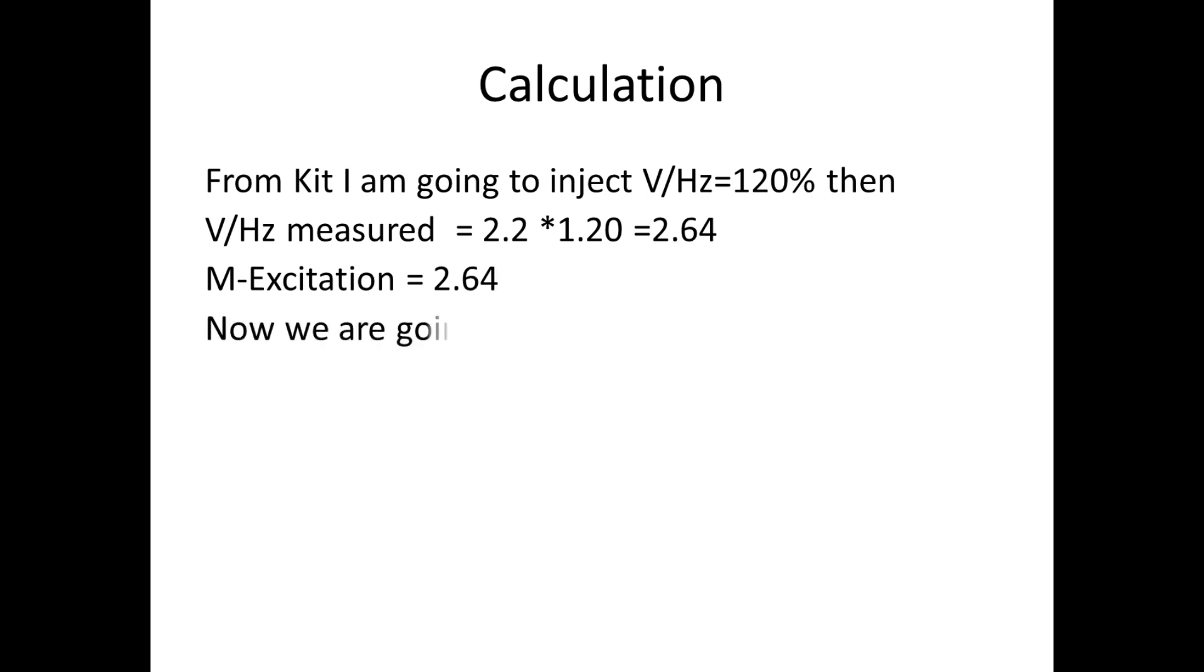Now we are going to find the trip time. In this formula we have M value. M is equal to M excitation divided by M low. If you substitute all the values we calculated above into this, we get M is equal to 1.0909 and K equal to 1.